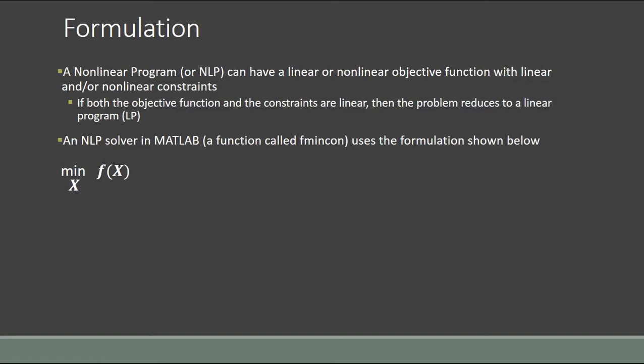The basic formulation looks like this: you have a nonlinear or linear objective function f of x, where f is some generally nonlinear function of the inputs, which would be contained in a column vector called x. In this example we have two inputs x1 and x2, but this could certainly be much longer — you could have dozens or hundreds of decision variables, and x would then become dozens or hundreds of elements long.